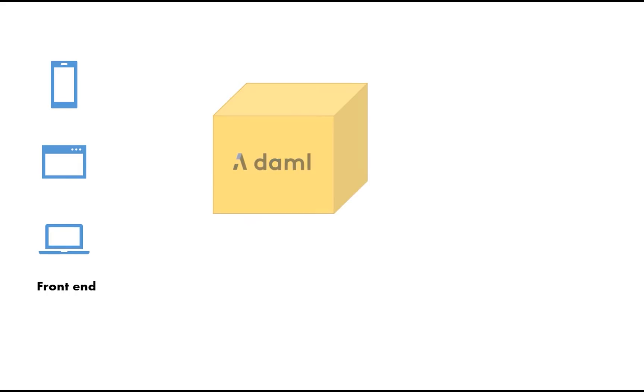Let's start the tour with the front end. The front end is your choice — you may be building a mobile app, a web app, or a native desktop app. The key is to get your front end communicating with the back end managed by the DAML framework. The way we're going to do it is to have the front end talk to the JSON API exposed by the DAML framework. There is more than one way to communicate with data in the DAML framework, but for the scope of this video we'll focus on the JSON API.